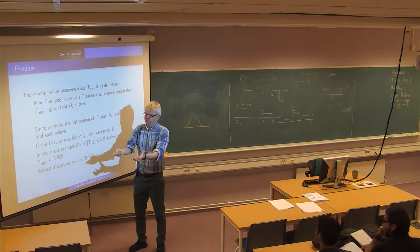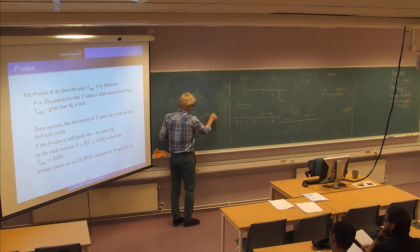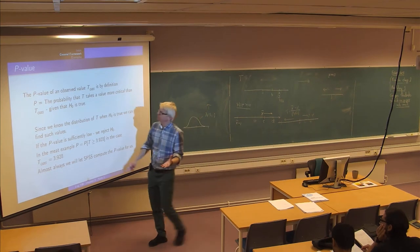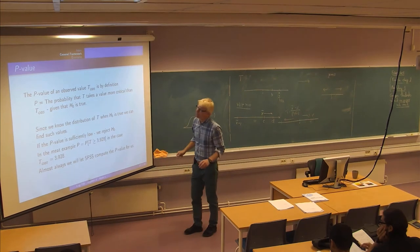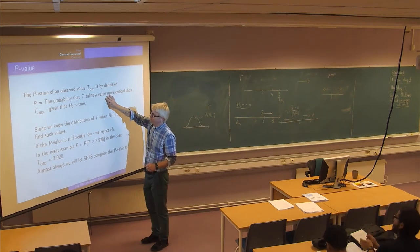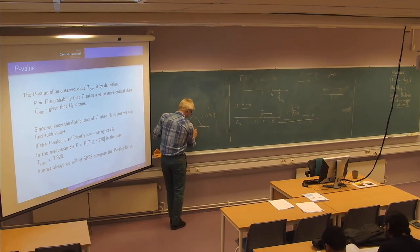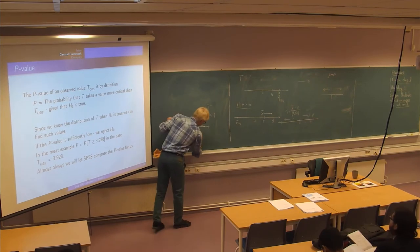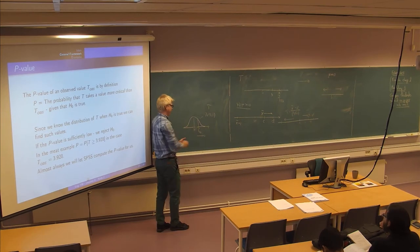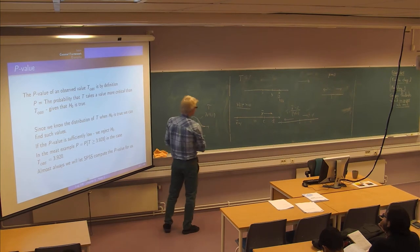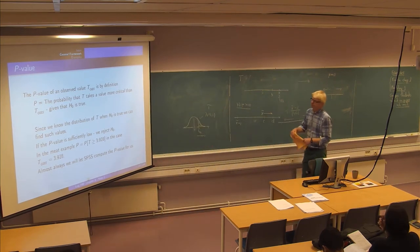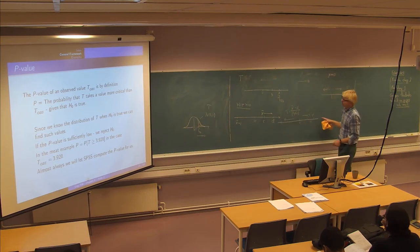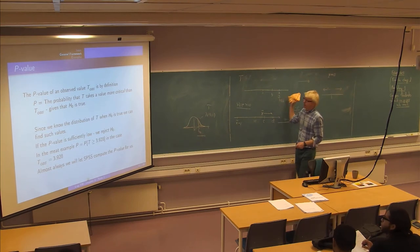To be more precise about the p-value: start by taking the sample, figure out the distribution of t if h-zero is true, then compute the observed value from your particular sample. If the critical direction is upward, compute the probability of being more critical than what you actually got — that is, the probability of t being greater than or equal to t-observed. What we did in the meat example was to say the critical direction is upward, so the p-value is this upper-tail probability.